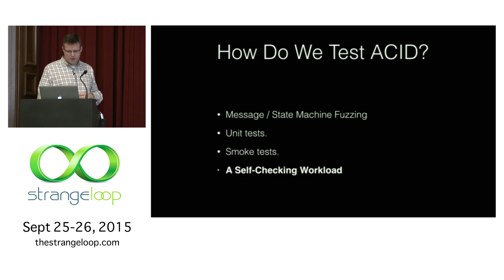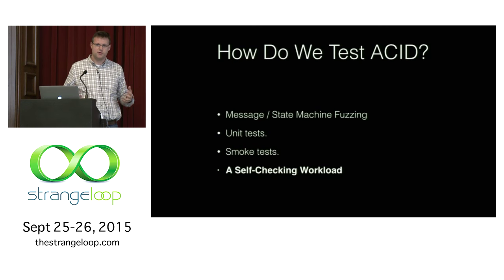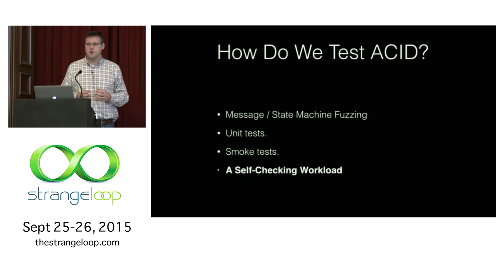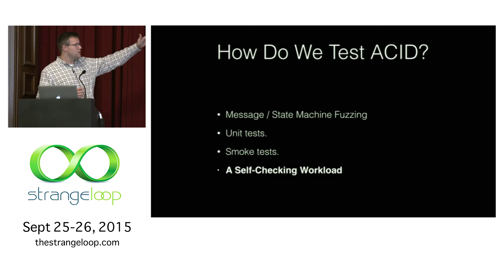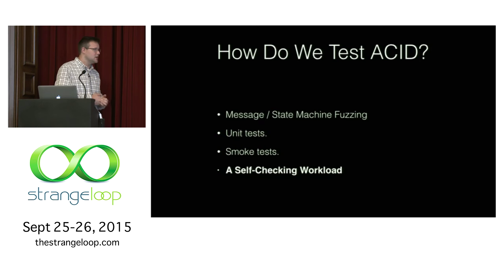So for the time being we believe we get more value out of the engineering person-hours spent testing the way we're testing. We do have a state machine fuzzing simulation that we built when developing our current concurrency protocol. It was super useful for initial development but hasn't found a bug in years. We also have unit tests and smoke tests. But what we really get the most value from for testing ACID is a self-checking workload.